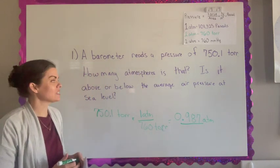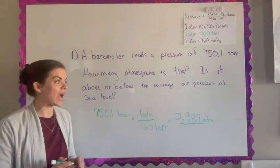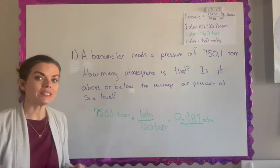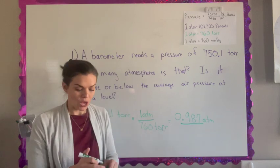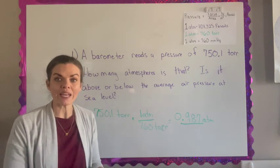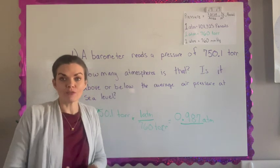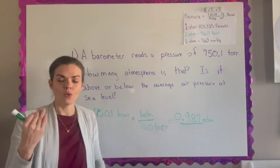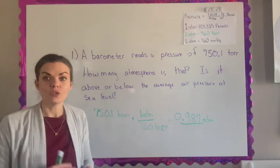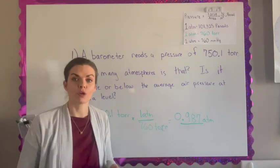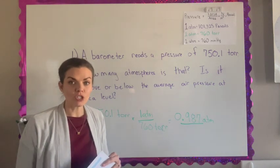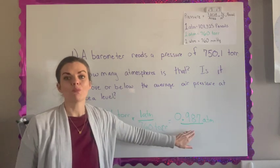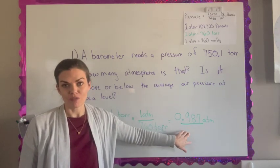Now the next part of the question asks is this above or below the average for air pressure at sea level. The reason it doesn't just say the air pressure at sea level is when we say sea level is one atmosphere that's actually an average. The air pressure can go up or go down depending on the weather. You can have high pressure systems or low pressure systems and so it's actually an average. So this is below the average pressure at sea level.